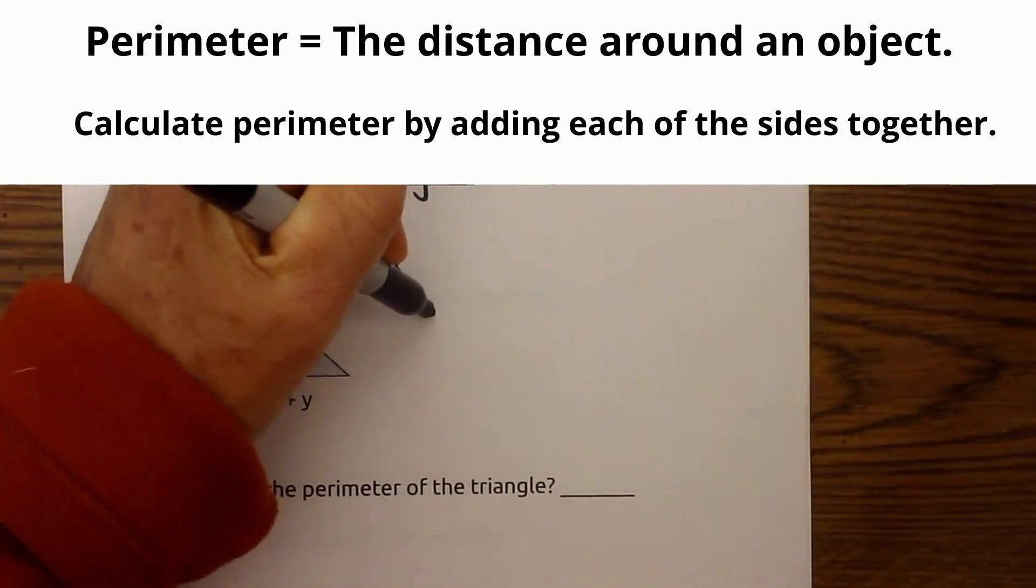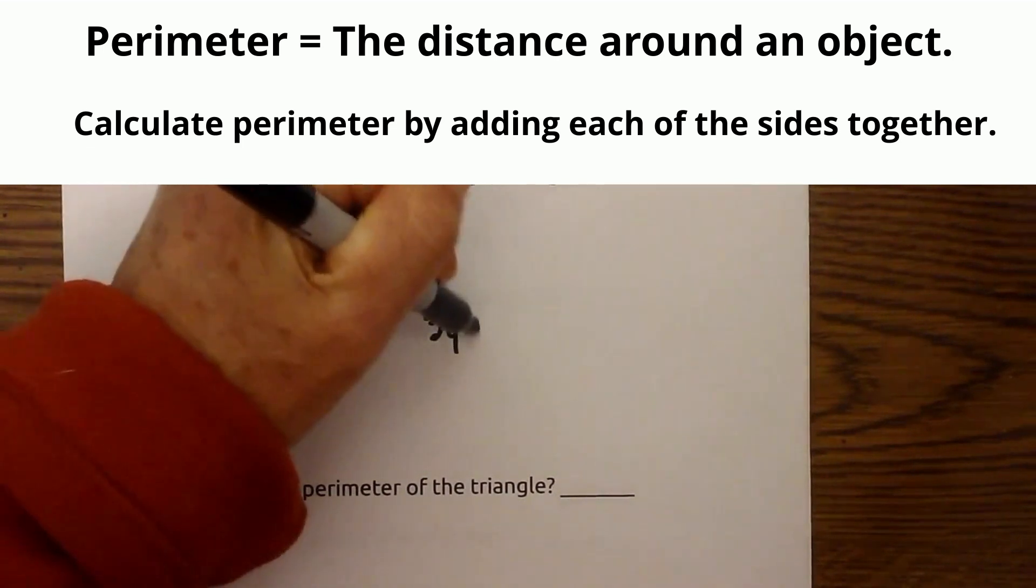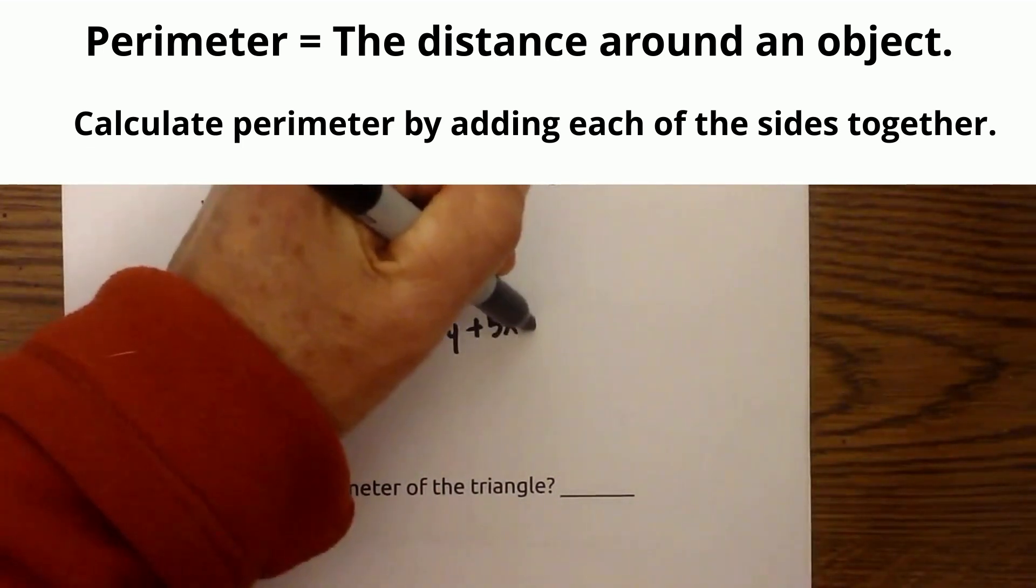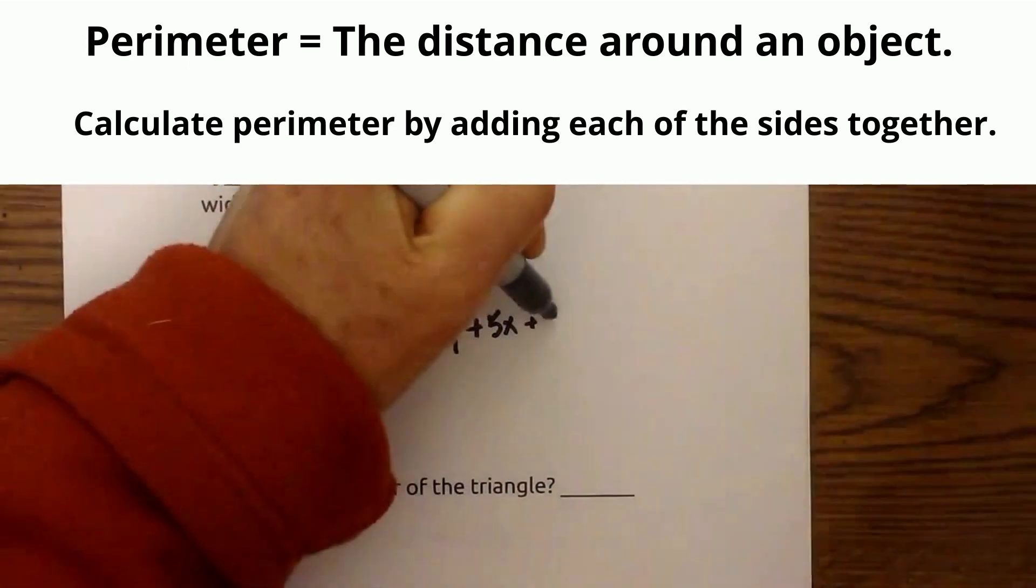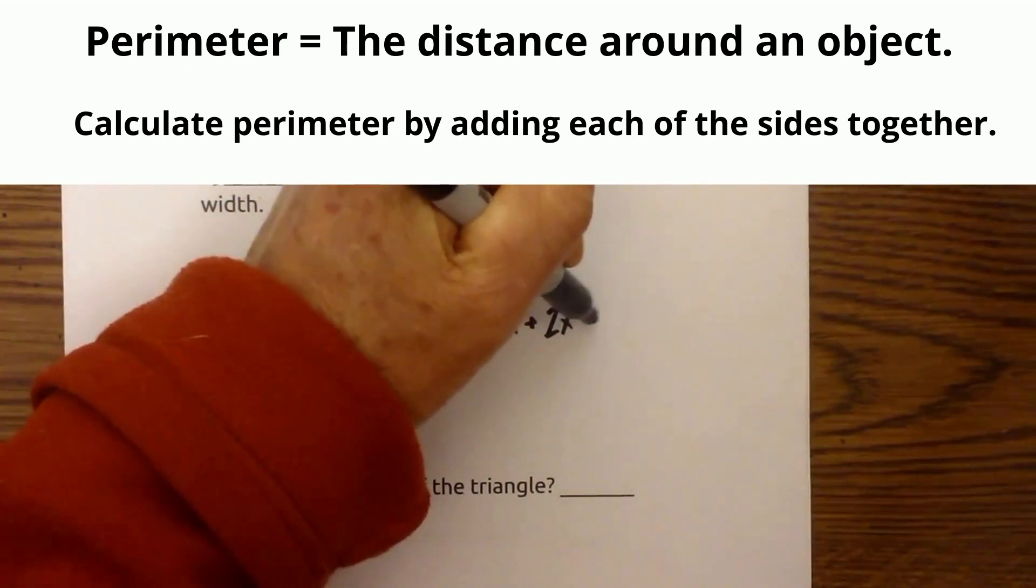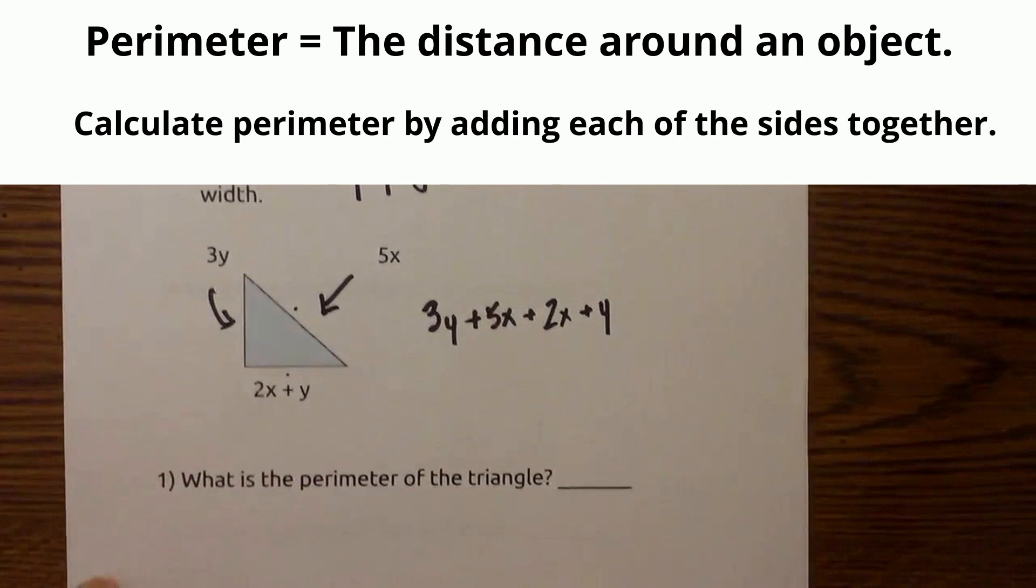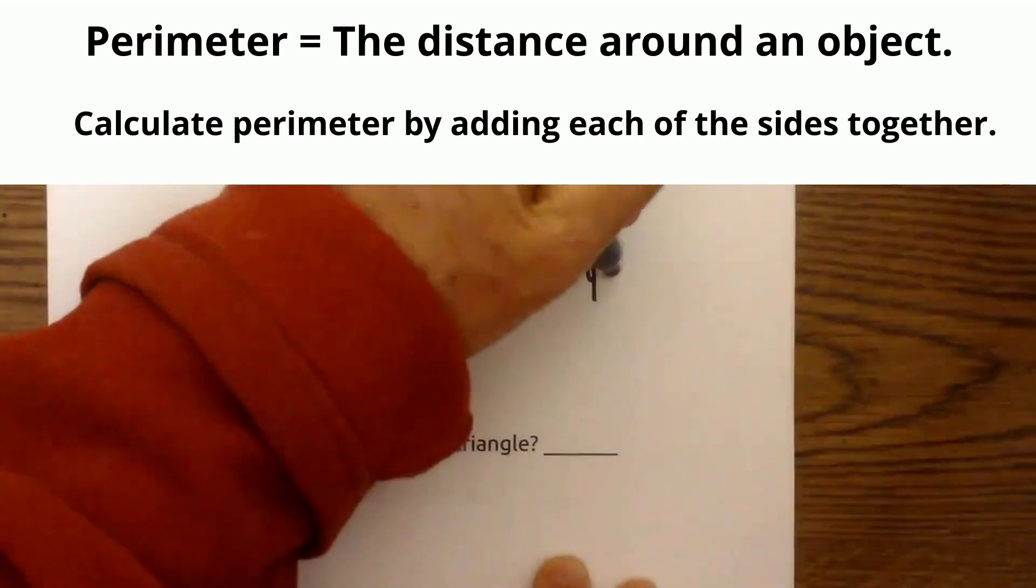My picture didn't turn out very well. We have 3y plus 5x plus 2x plus y. Now equals the perimeter.